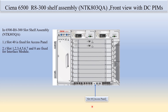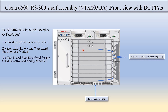Slots 1 through 8 are fixed for the interface module. Starting from the bottom: slot 1, 2, 3, 4, 5, 6, 7, 8 — these 8 slots are fixed for the interface module.